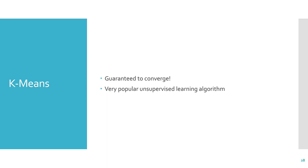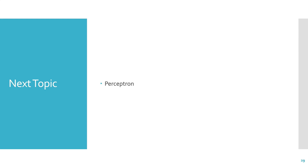K-Means is great because it's guaranteed to converge — no matter what K you choose and no matter what initial condition you give it, it will converge. It's a very popular unsupervised learning algorithm. That's it for clustering. The next topic for this class is going to be the perceptron.